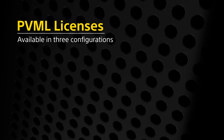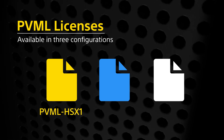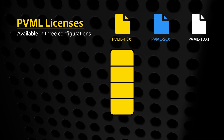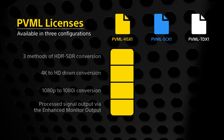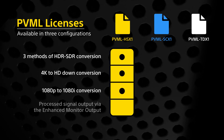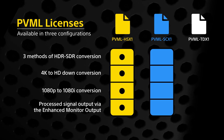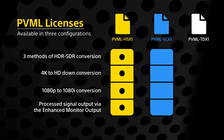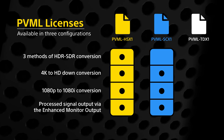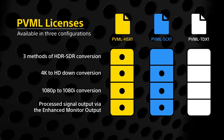For maximum flexibility in accommodating various workflow demands, the conversion licenses are available in three different configurations: PVML HS-X1, PVML SC-X1, and PVML TD-X1. The PVML HS-X1 license provides all of the conversion features in a single license, including three methods of HDR to SDR conversion, 4K to HD down conversion, 1080p to 1080i conversion, and processed signal output via the enhanced monitor output. The PVML SC-X1 license is available for broadcast workflows using a LUT for color conversion but still requiring 4K to HD down conversion as well as 1080p to 1080i raster conversion for in-house monitoring purposes. The PVML TD-X1 license is available for customers only interested in a LUT-processed output.